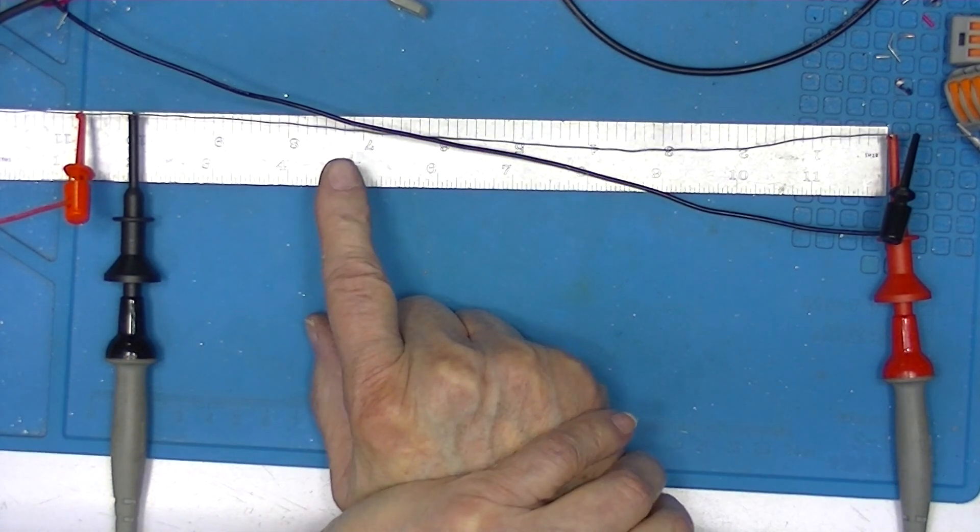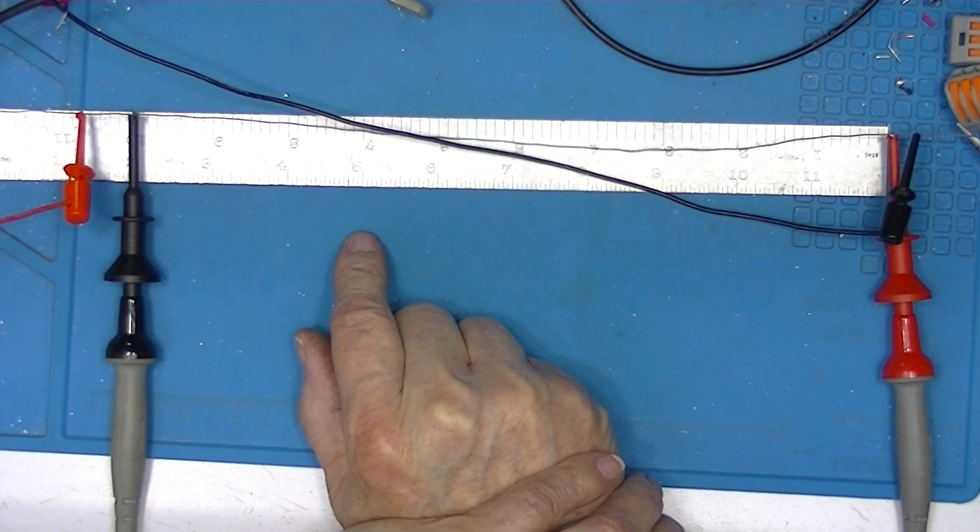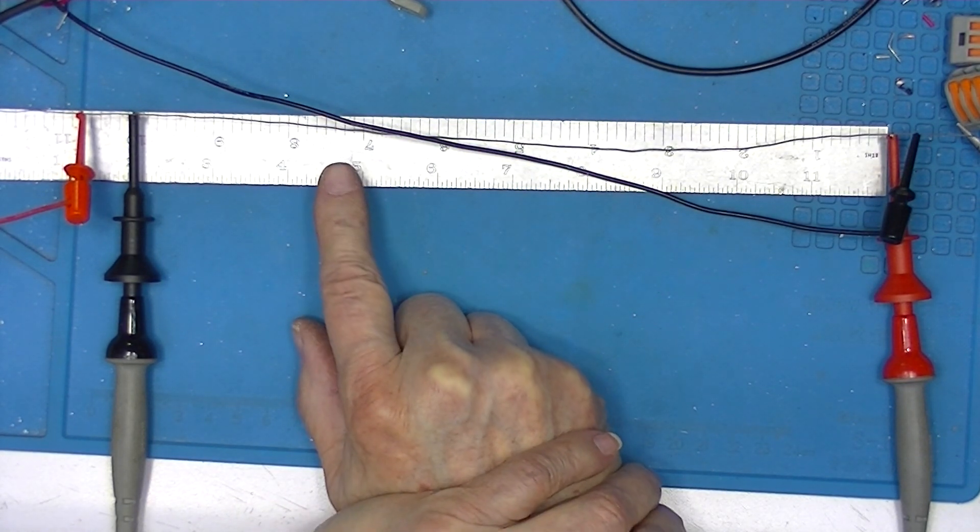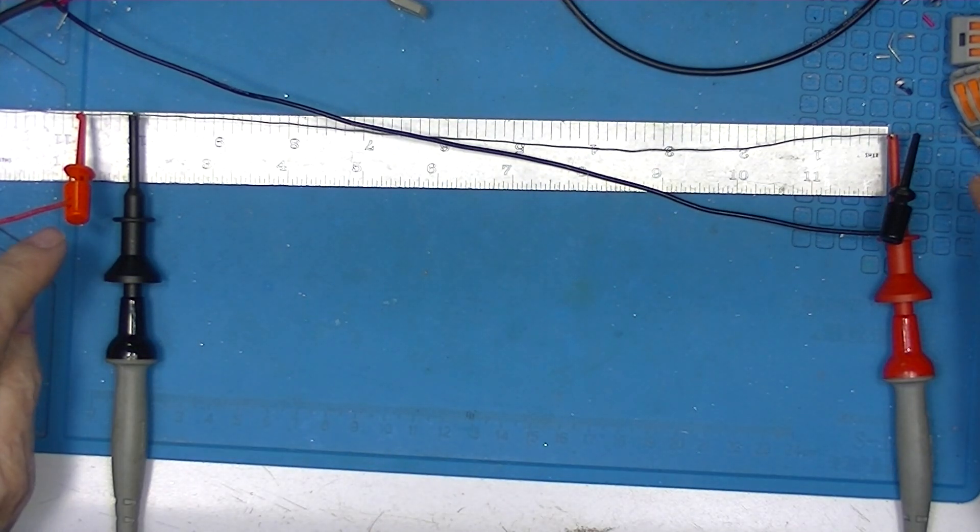Now this is good to know because this could be used as a meter shunt or anytime you would need to make a custom resistor. What we're doing here is using a four-wire measurement.